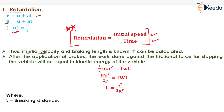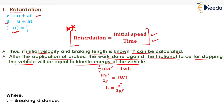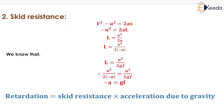If initial velocity and braking length are known, the friction coefficient F can be calculated easily. After brake application, work done against frictional force equals the kinetic energy of the vehicle: (1/2)MU² = F·W·L. Solving this, braking distance L = U² / (2GF), where L is the braking distance.